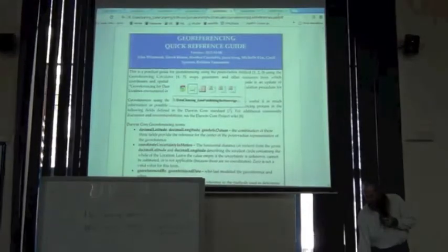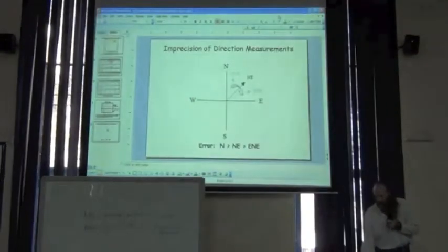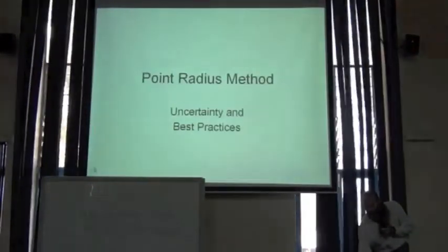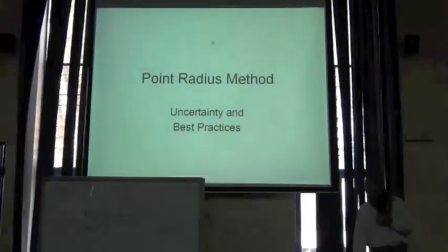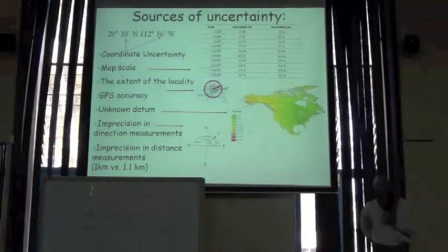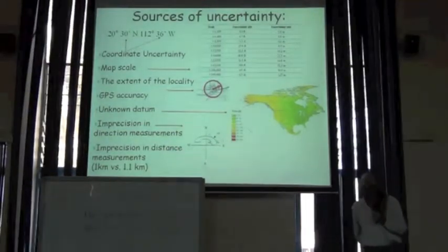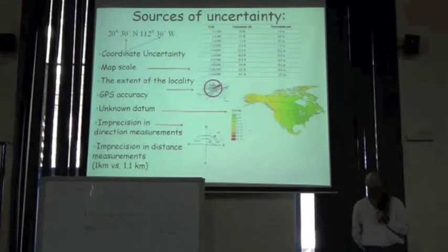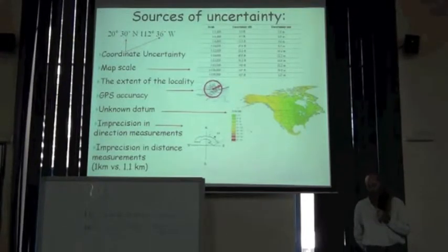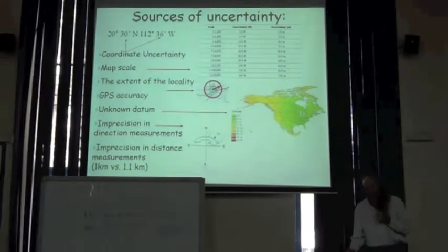What I'll do now is talk a little about the consequences of using the point-radius method to determine georeferencing. This is a presentation on the point-radius method — a brief set of explanations of the sources of uncertainty when doing georeferencing. This one page gives an overview of all the different kinds of considerations that come into play when doing a georeference and finding the attribute called the coordinate uncertainty in meters. There are many different sources — I'll go through them briefly and then explain each one in more detail.